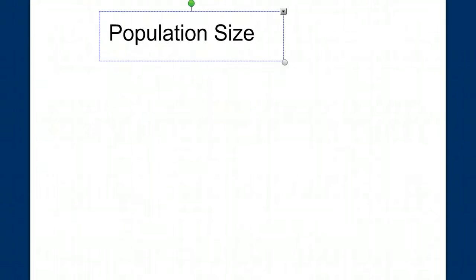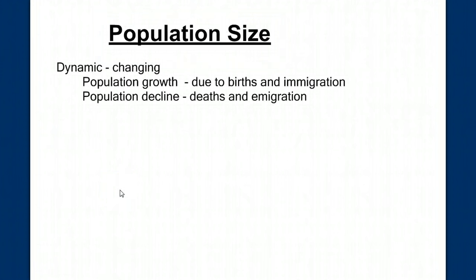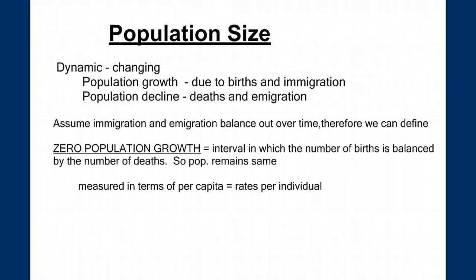Let's move on to population size. Population size is dynamic, it's always changing. It grows due to births and immigration, individuals moving in, and it declines due to deaths and emigration, individuals moving out. If we assume that immigration and emigration will balance each other out over time, we can define zero population growth as an interval in which the number of births is balanced by the number of deaths, so that the population remains the same. We usually measure this in terms of per capita, in rates per individual.